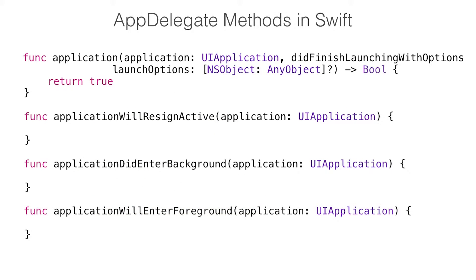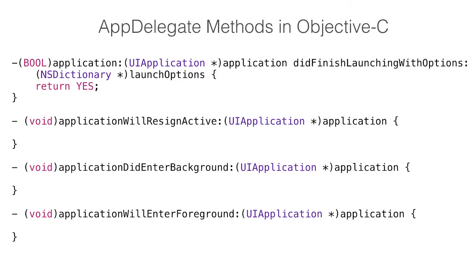Let's take a look at another example. Here are some of the methods of the AppDelegate protocol. You'll notice that if you create a new project template in Xcode, whether it's in Objective-C or Swift, the same six AppDelegate methods appear by default. I'm just showing the first four here, but you get the idea. And here they are in Swift, and here they are in Objective-C.